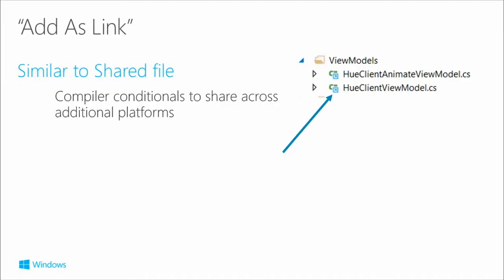For Add as Link: when adding a file through the normal dialog, at the very end there will be an arrow on the button. Click that arrow and you get the option to Add as Link. Every linked file shows up with a little blue icon. If you're using this across, for example, a universal application and a Silverlight 8 application you're still supporting, you can use compiler conditionals to share across those two platforms.